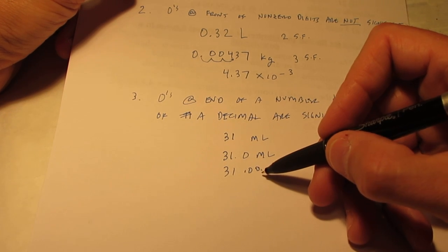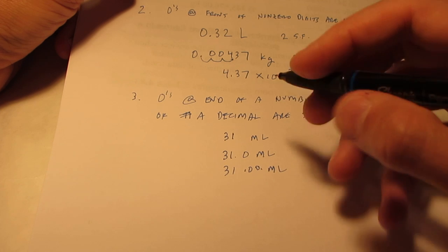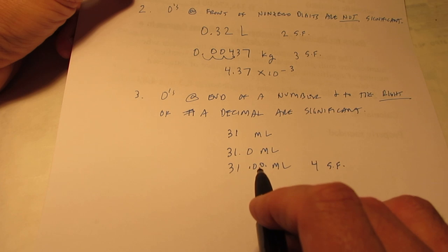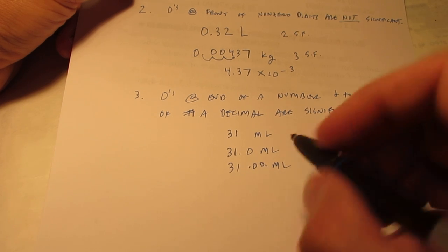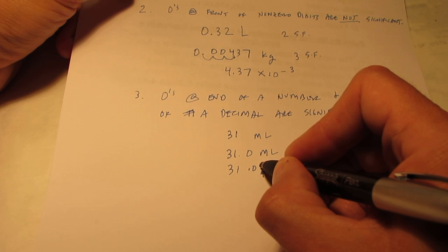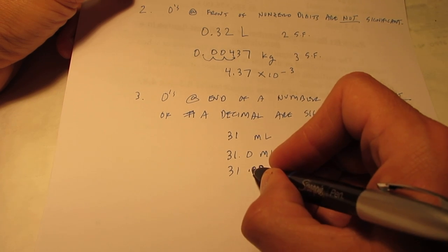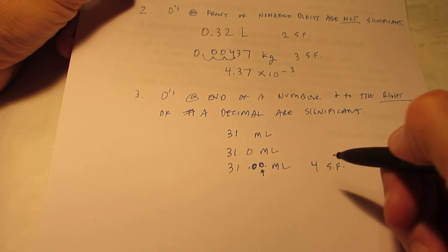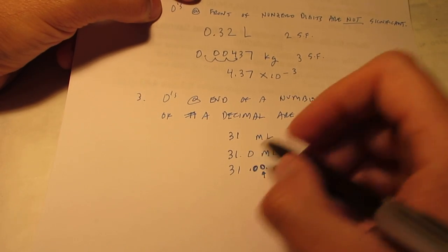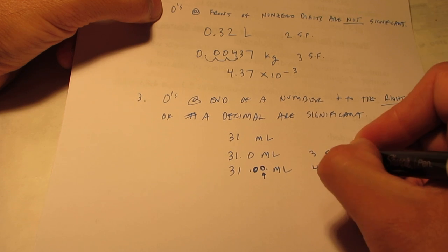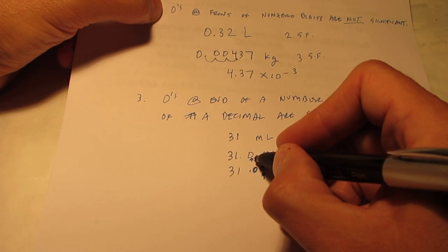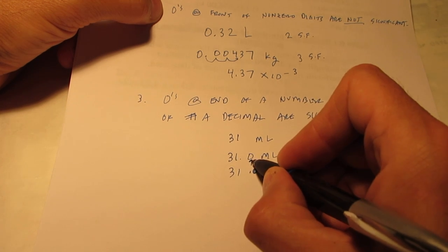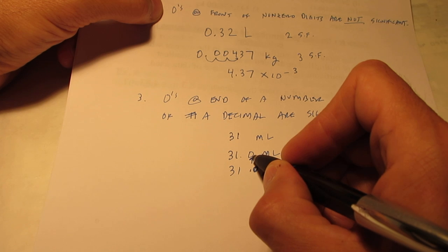Well, obviously, the one to the nearest hundredth was the most accurate. This value here has four significant figures. So, I know this is my estimated digit. I'm only allowed to write down one of those. That means I know that this one is for sure. And of course, the one and the three are for sure also. The one above has three significant figures. This is my estimated digit. So, I know the one and the three for sure. But I only know that zero there is an estimated value.